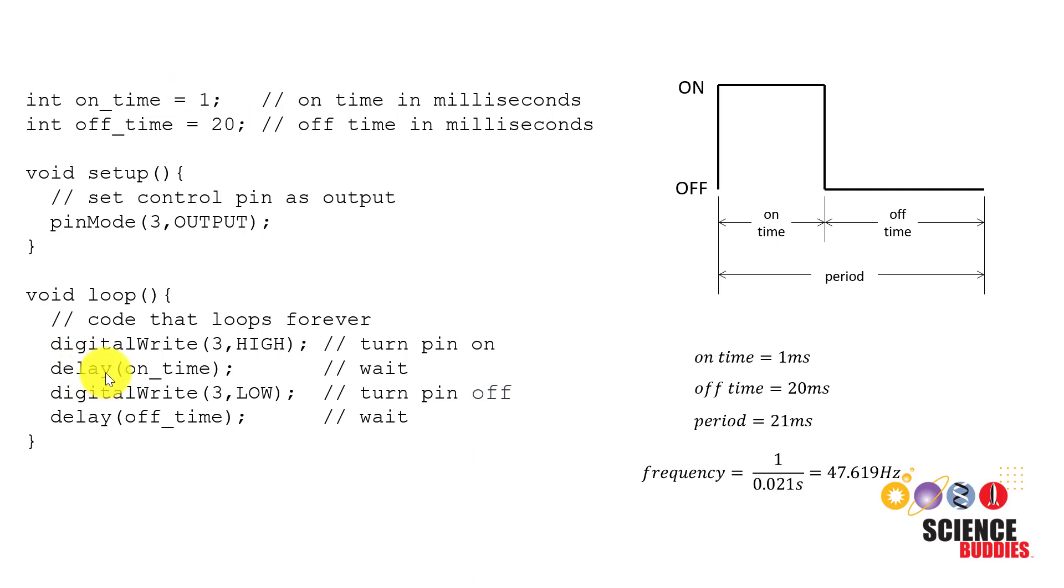There are ways you can get around that—for example, by chaining multiple delays together sequentially, as long as each delay stays below that roughly 16,000 microsecond limit—but we're not going to go over all of those in this video. Instead, if you follow the link to the project on the Science Buddies website in the description of this video, you can find working downloadable example code.